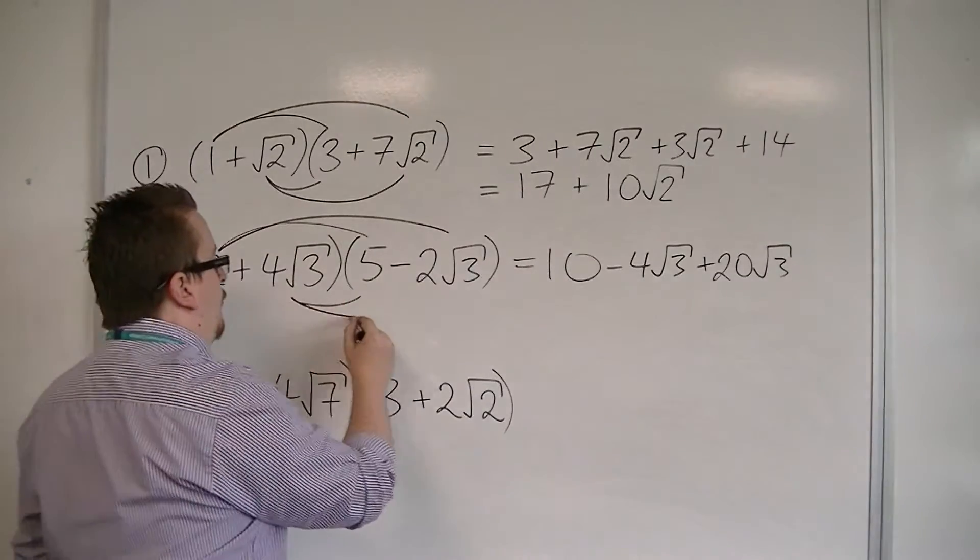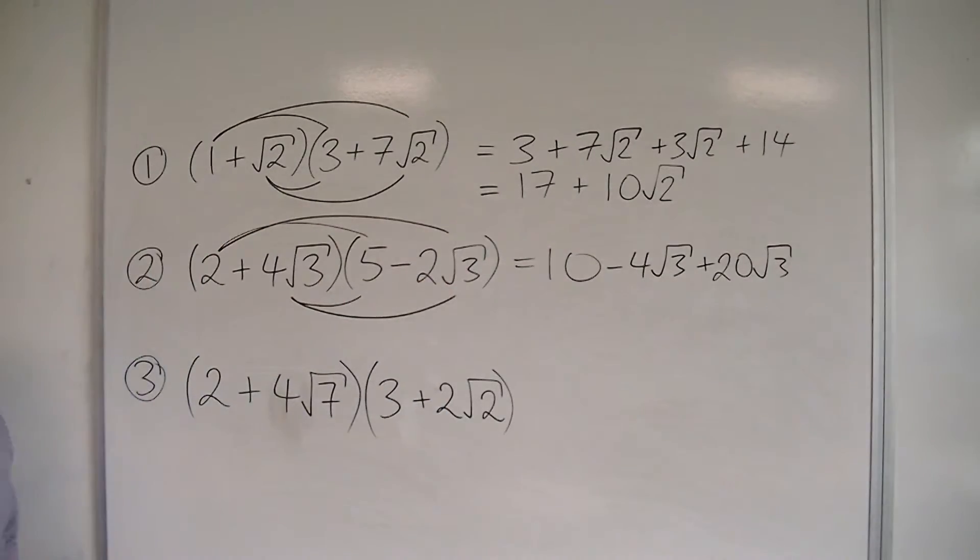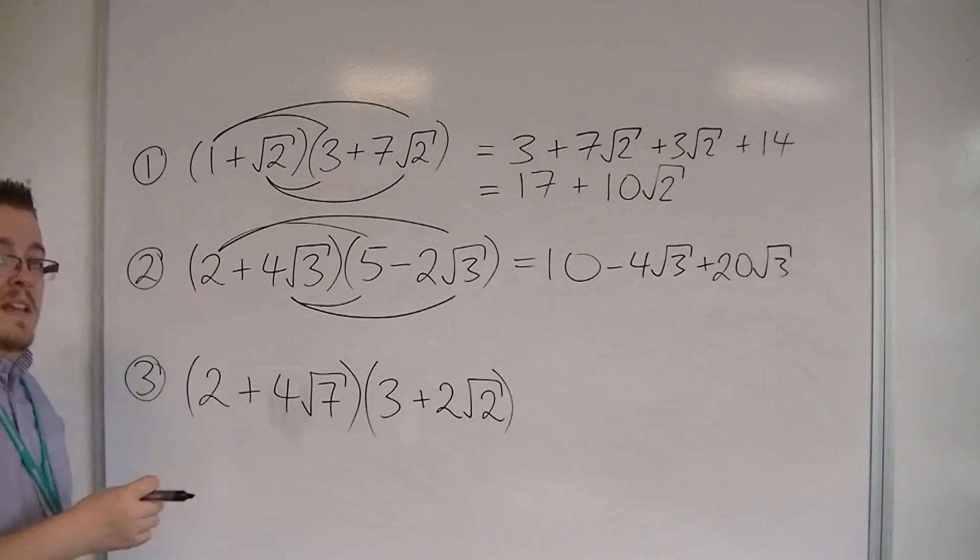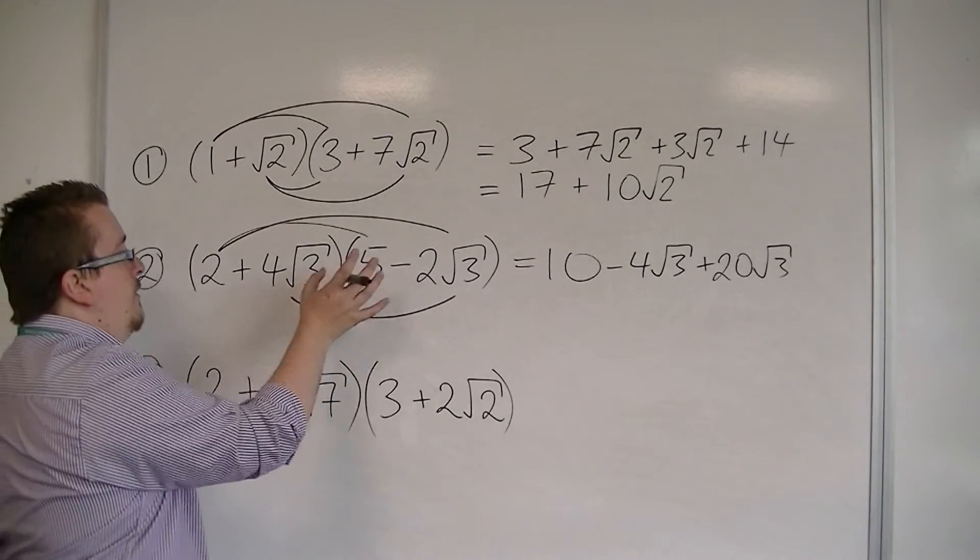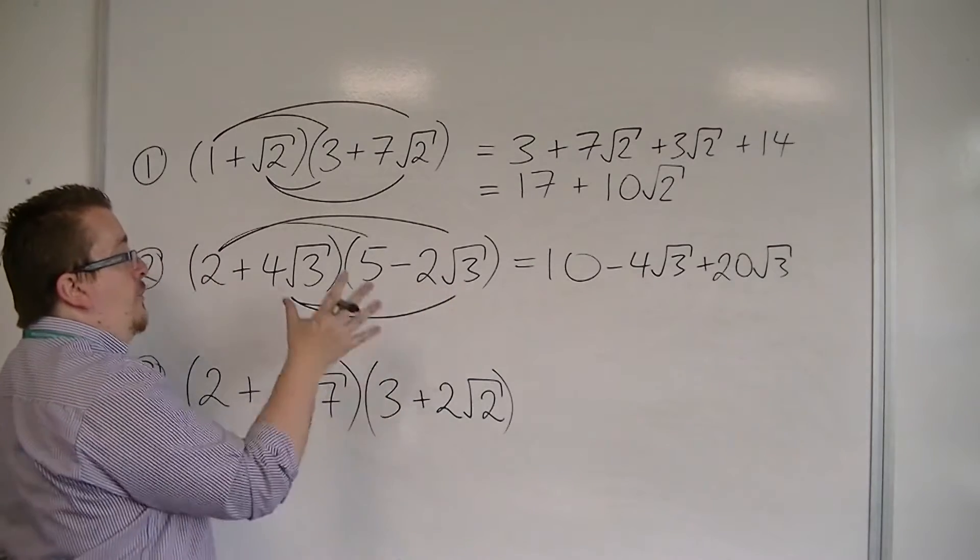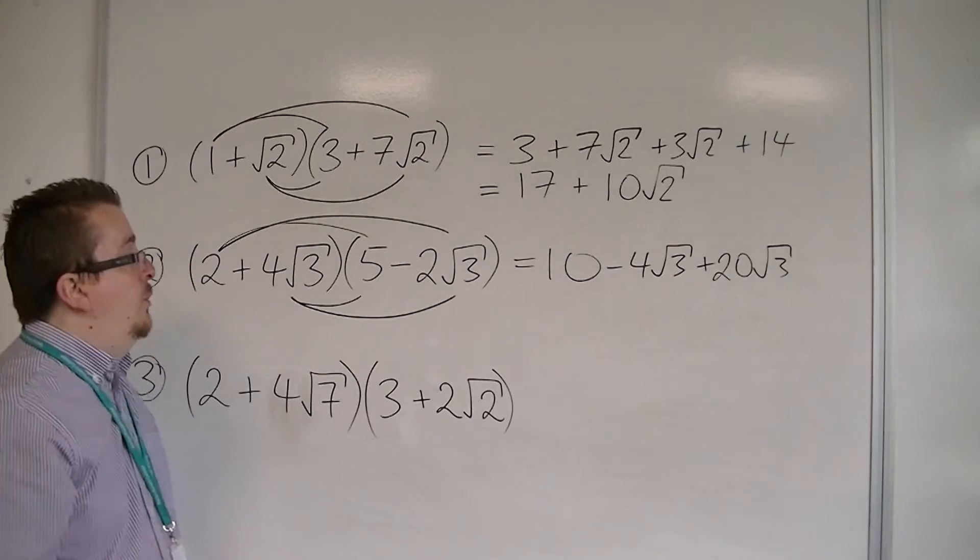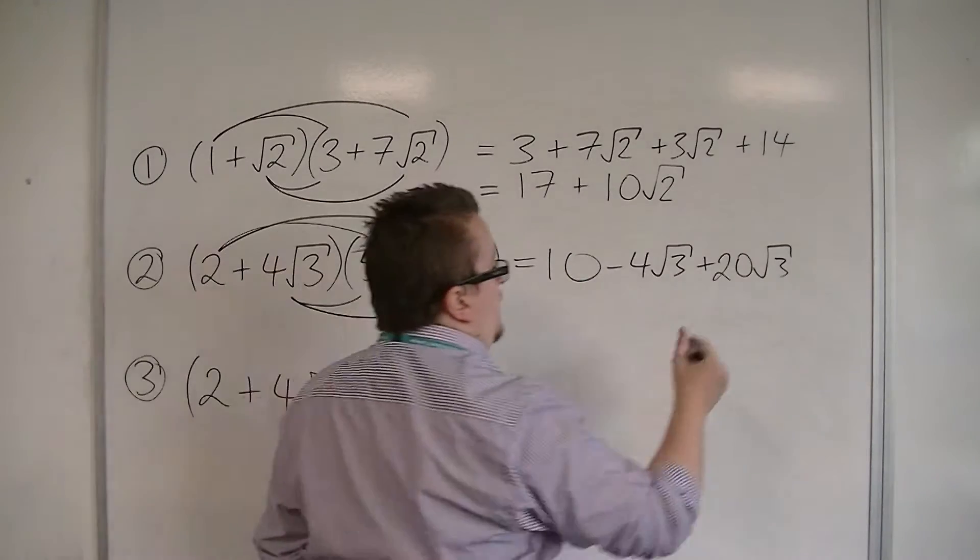And then finally, I've got 4√3 times -2√3. The 4 and the 2 multiply together make 8. The √3 times √3 is 3. So I've got the 8, I've got the 3. Multiply them together, I get 24. So it's -24.